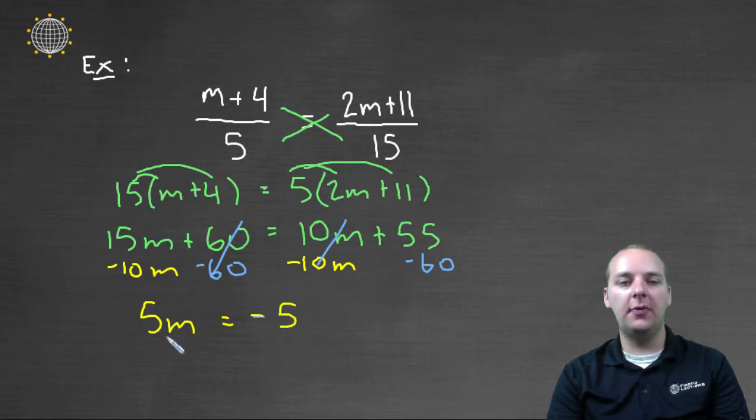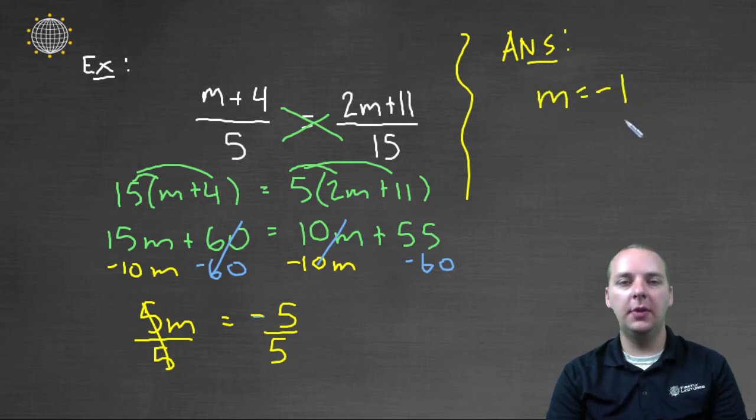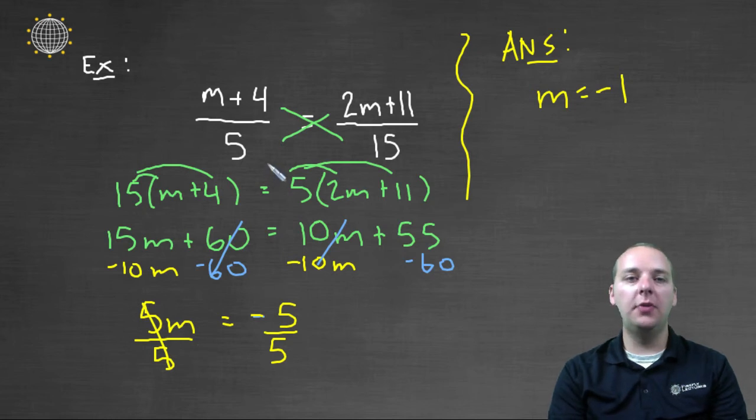Last step, to solve for m, we'll divide by the variable's coefficient of five. The fives will cancel, and our final answer would be m equals negative one, m equals negative one. So we've solved the proportion.